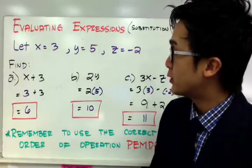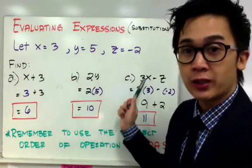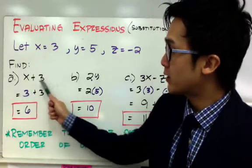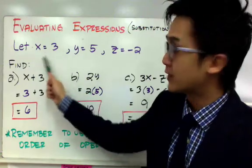All we have to do is substitute or plug in the value of x, y, and z to its corresponding operations. So for letter A, since I have x plus 3, I will replace x by my value of x that is given in the problem, which is 3.